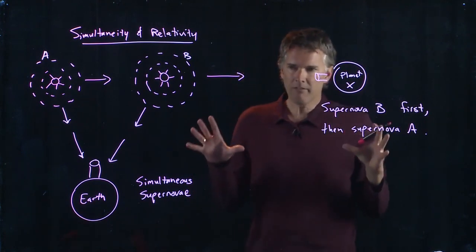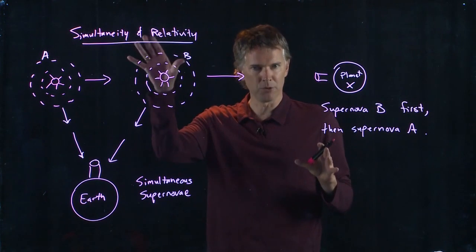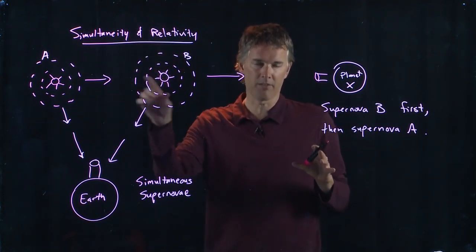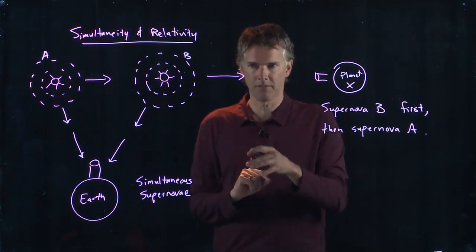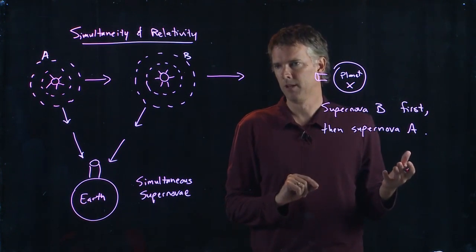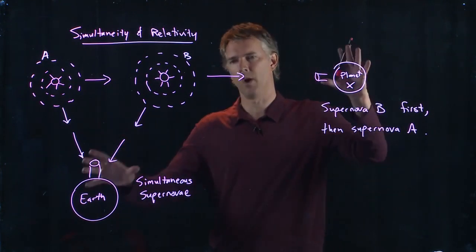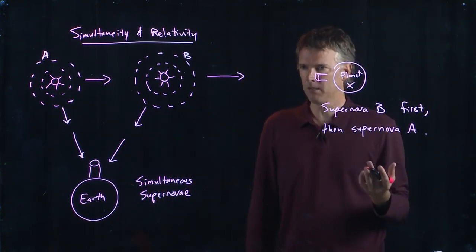And so in the physical world, there's no such thing as simultaneity. Two events that you observe as simultaneous are not necessarily observed by someone else as simultaneous. It depends not only on where you are located, but it also depends on your relative speeds.